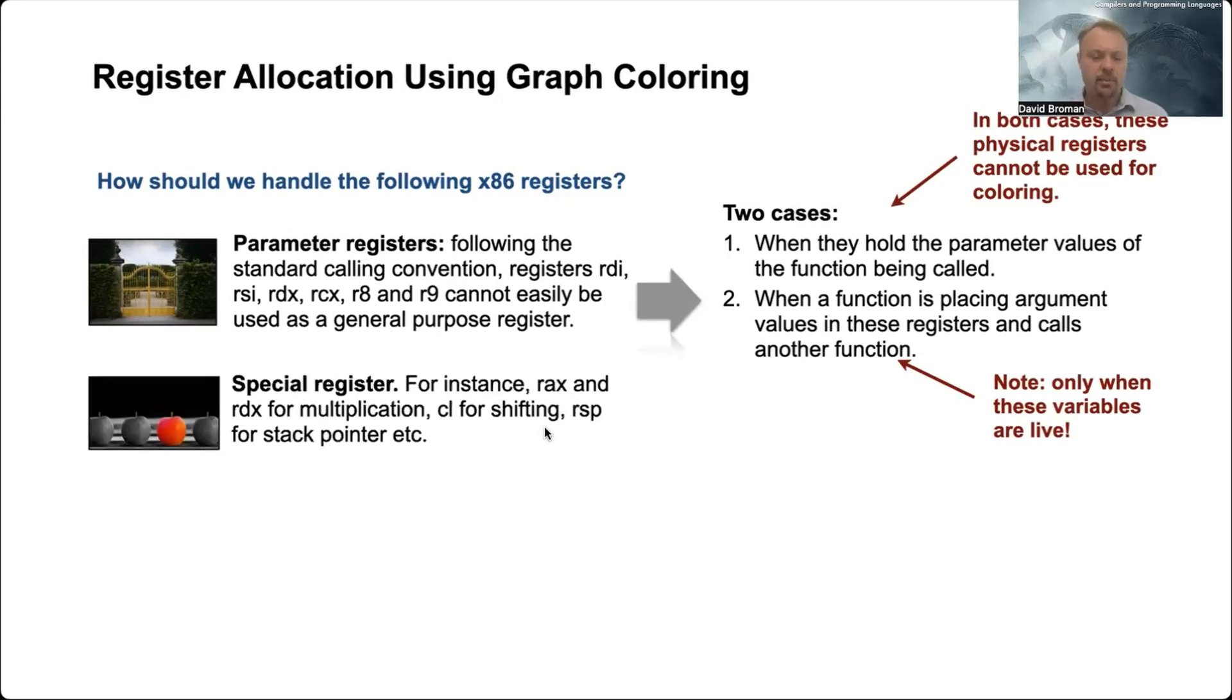Another thing is that we have these special registers. For example, we have RAX or RDX where you're doing multiplication, or CL for shifting, and so forth. And we need to encode that in some way.